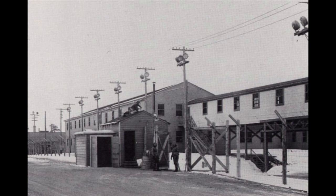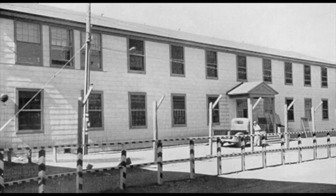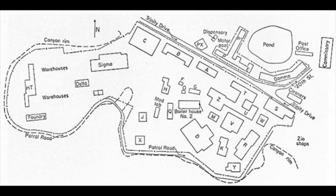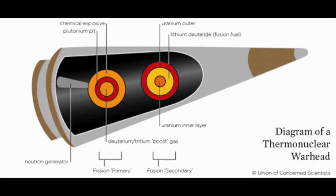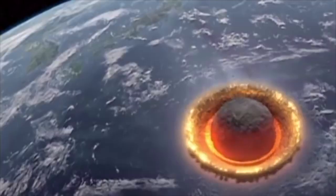The project faced significant challenges, including limited resources, time constraints, and the need for immense scientific breakthroughs. One of the major obstacles was the successful enrichment of Uranium-235, along with the production of Plutonium-239, both fissile materials required for nuclear weapons. Overcoming huge odds, the scientists made lots of progress and were getting ready to test this incredible invention.